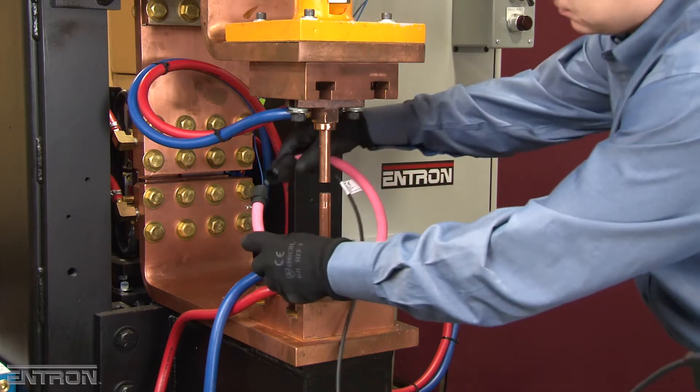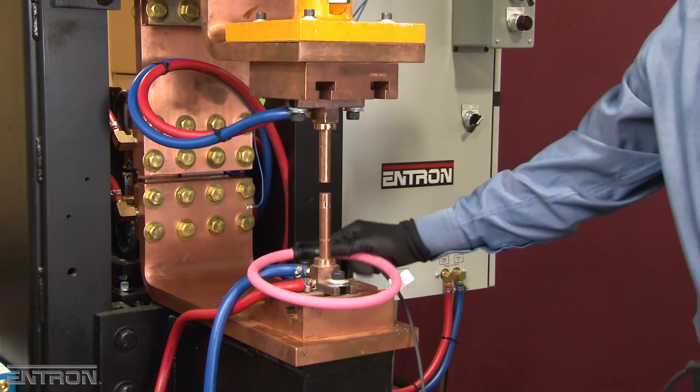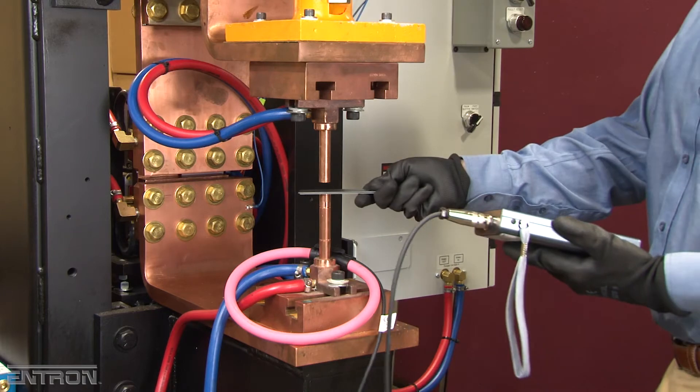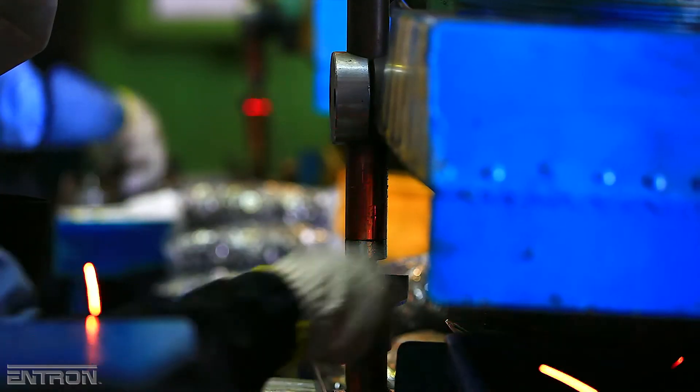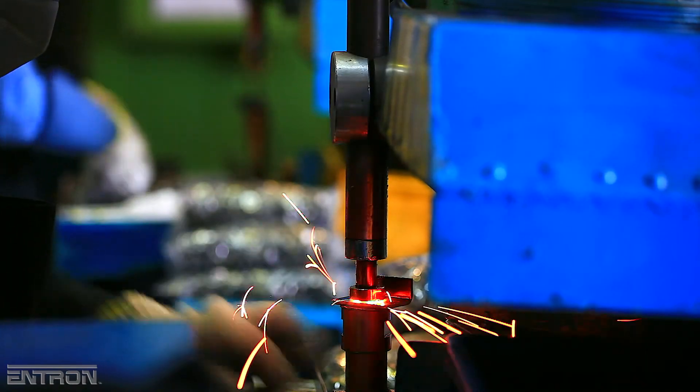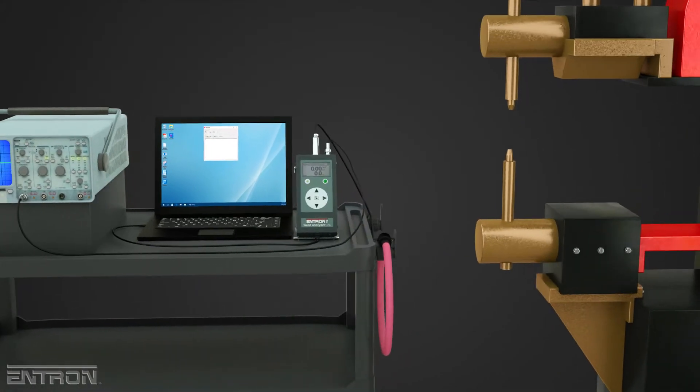The rechargeable WA2 provides welding engineers, technicians, and operators a convenient tool to measure weld system current for monitoring system conditions, improving process quality, and troubleshooting weld schedules. Using the Entron WA2 is easy.